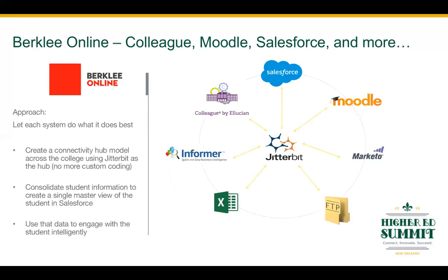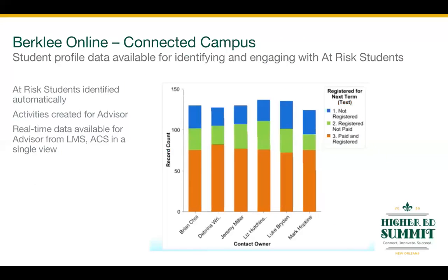Using Jitterbit and a hub and spoke model, they share relevant information from each of these systems into Salesforce and treat it as the system of engagement. The LMS system houses student participation and performance information, like when's the last time a student turned in an assignment and how are they doing on completed work. This is becoming ever more important as online institutions are held responsible based on students' financial aid. The ACS financial system might show data like if a student paid for a class they've enrolled in. One of the goals for the advisors at Berklee is to identify at-risk students early and resolve the issues.